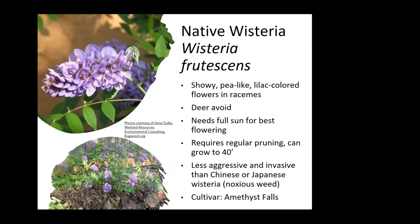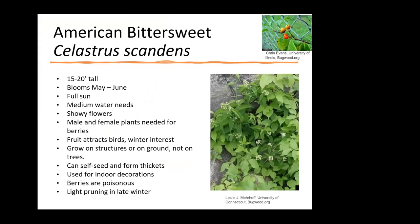The same goes for American bittersweet — a lot of times we plant foreign bittersweets, but we have a native plant that does great. It gets 15 to 20 feet tall, blooms in May or June, and has showy berries. The berries are poisonous to people but birds love them. You do need a male and female plant to have berries. It can self-seed and form a thicket, so it can be a little aggressive.